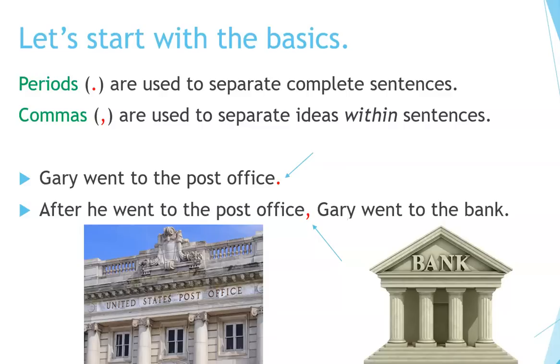This is a complete sentence. After he went to the post office, Gary went to the bank. Here a comma is used to separate the two ideas within the sentence.